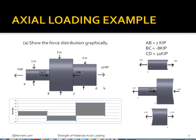To show the force distribution graphically, you would use statics — summing your forces so they equal zero. For section AB, you have 7 KIP (7,000 pounds) acting in tension, so on your graph that is positive 7 KIP. For section CD, you have 21 KIP in tension, so that is positive 21 KIP on the graph. For section BC, you take 7 KIP minus 15 KIP; since that doesn't equal zero, you find the balancing value of 8 KIP, which puts this section in compression — so it is negative 8 KIP on the graph.